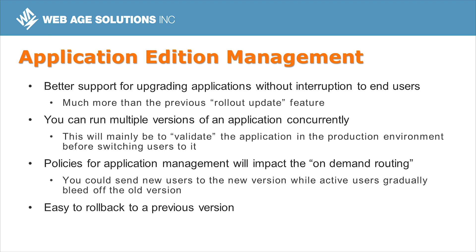All WebSphere environments need a solution for updating applications with as smooth a transition as possible. WebSphere 8.5 provides better support for upgrading applications without interrupting end users — you can run multiple versions of an application concurrently, which is useful for validating applications before rolling them out. When ready, the on-demand routing system can send new users to the new version while active users gradually bleed off the old version, and it's easy to roll back to a previous version if needed.